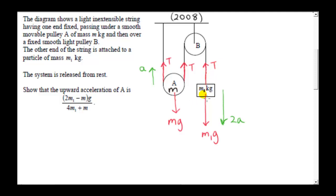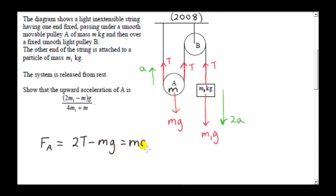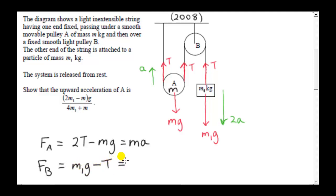From the previous analysis, if pulley A accelerates upward with acceleration A, then the mass M₁ accelerates downward with acceleration 2A. We have string tension T and the weights of the two objects. Taking upward as positive for A, the resultant force on A is 2T minus Mg, equal to M times A. Taking downward as positive for M₁, the resultant force is M₁g minus T, equal to M₁ times 2A.